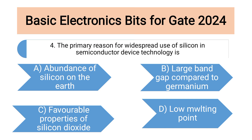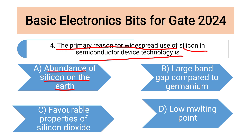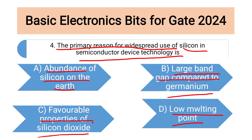Now coming to the fourth question: the primary reason for the widespread use of silicon in semiconductor device technology is — why do we use silicon mostly for making any semiconductor device? We have many other options like boron, germanium, and indium. The four options are: first, abundance of silicon on the earth; second, large band gap compared to germanium; third, favorable properties of silicon dioxide; and fourth, low melting point.